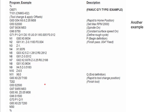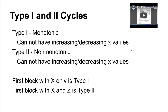Here's another example — really the only difference is a slightly longer profile and a tool change for the finishing pass. Same sort of idea. The G71 starts at P1 (line N1), but this one ends at line N11 indicated by the Q value, so all blocks between N1 and N11 are included in the profile.